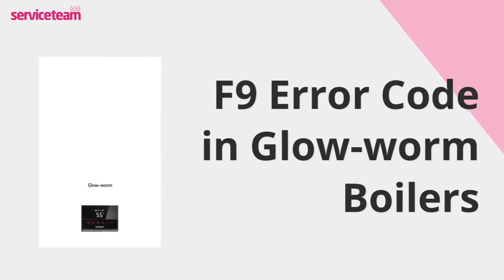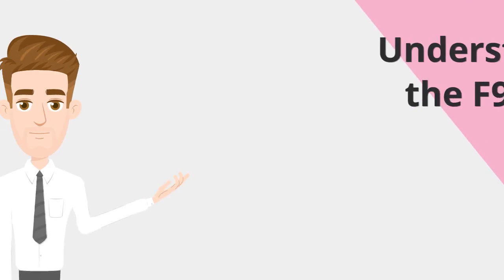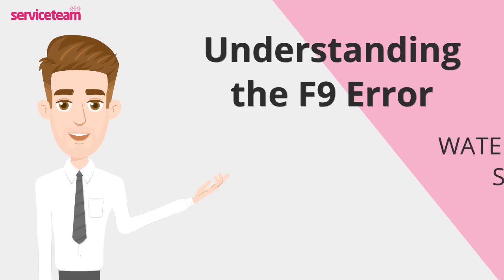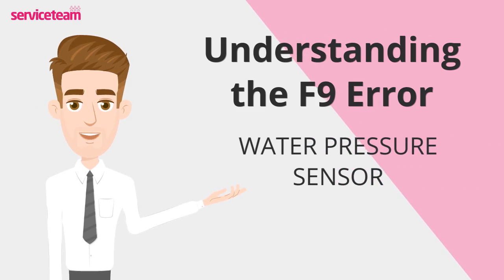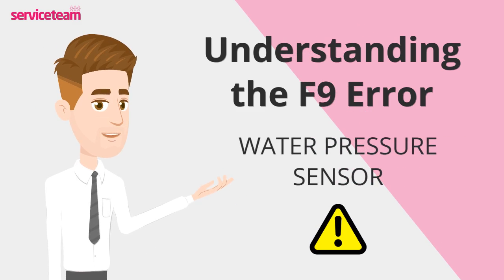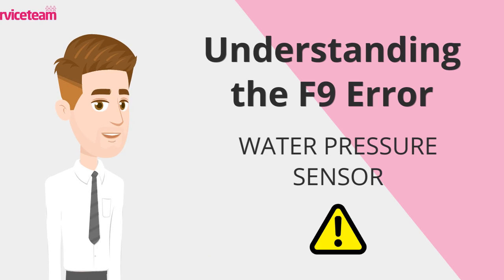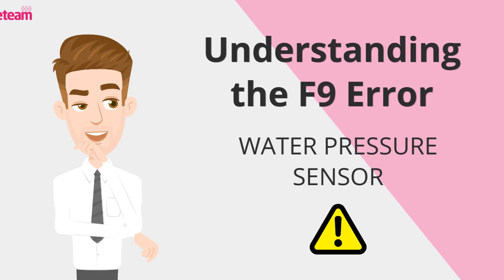Let's figure out how to resolve the F9 error code on the Glow-worm boiler. The F9 fault code on a Glow-worm boiler means there's an issue with the water pressure sensor. This sensor is important for keeping the right water pressure in the boiler system. If the sensor isn't working correctly or shows wrong readings, the boiler displays the F9 error code to avoid any further problems.